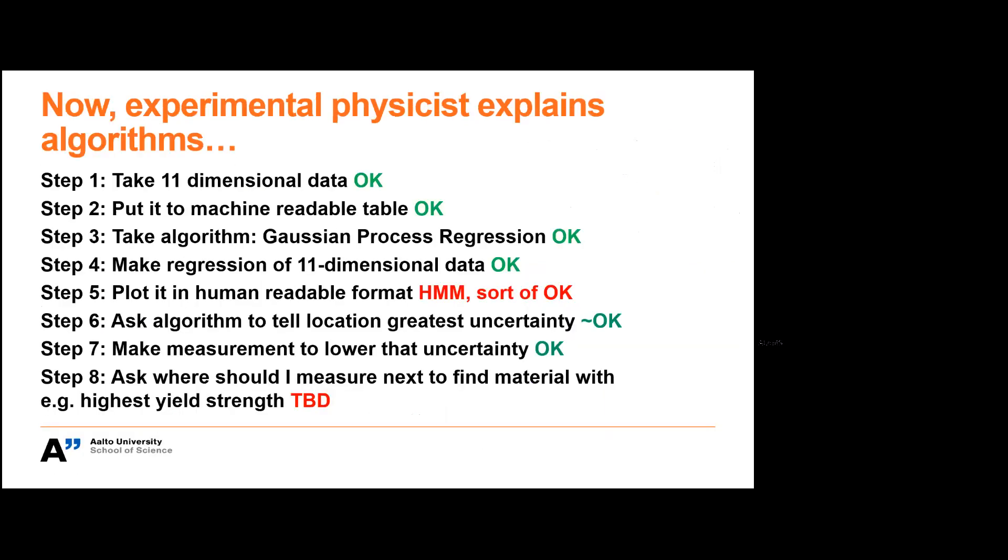So now I try to explain how this thing works. Our data cube has 11 dimensions. Basically we have one measurement, one set of parameters and then we make 11 measurements. Some of them include parameters of the material. I put it in a machine-readable table. I take some algorithm, here we use Gaussian process regression. We make the regression of this 11-dimensional data. And then we try to plot it in a human readable format. But then we can ask the algorithm what is the location of greatest uncertainty. And then we make a measurement to lower that uncertainty.